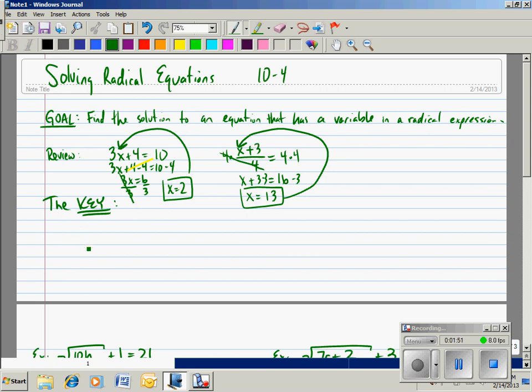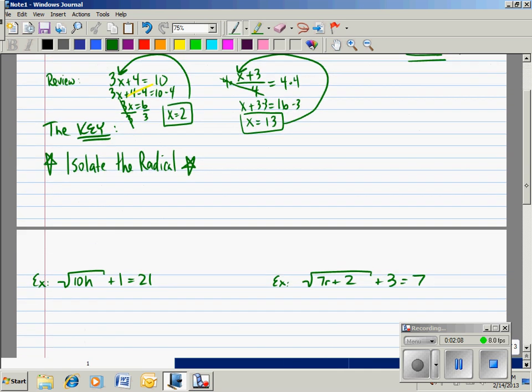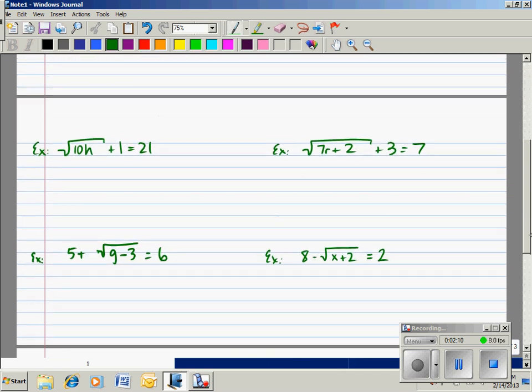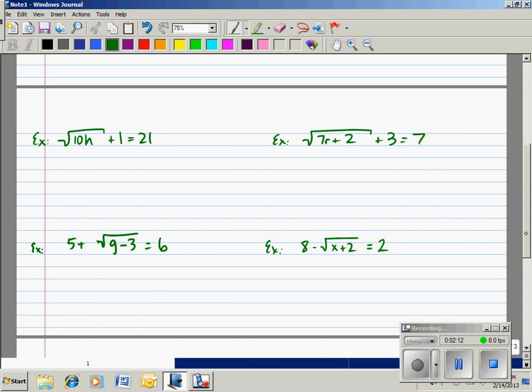So the key to solving equations that have a variable in the radical is to isolate the radical. It's just like getting the variable all alone. We want to get the radical all alone. So we'll look at 5 examples, and then I'll have you practice a few.